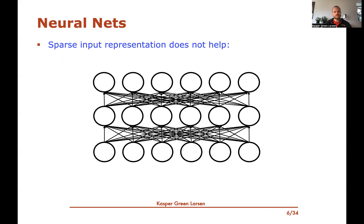For neural nets, however, sparse inputs don't really help. There's no way to feed a list or dictionary into a neural net. Even if only a few neurons in the first layer are non-zero, in a fully connected net the next layer could already be non-zero everywhere. You also need one neuron for every possible word in the dictionary. So the sparse representation breaks down for neural nets, and this is what feature hashing addresses.